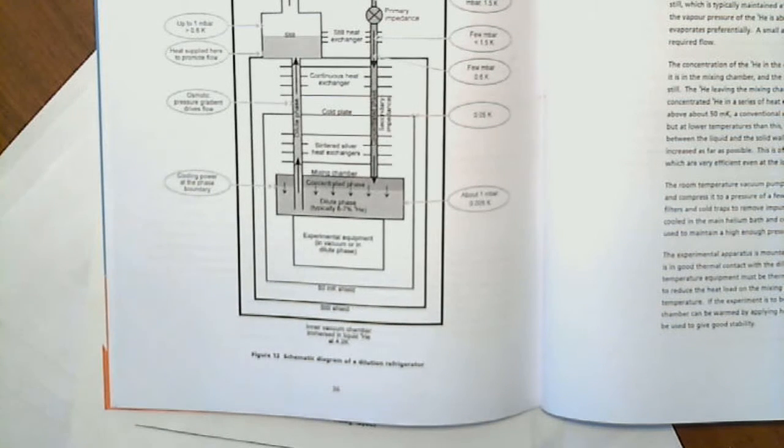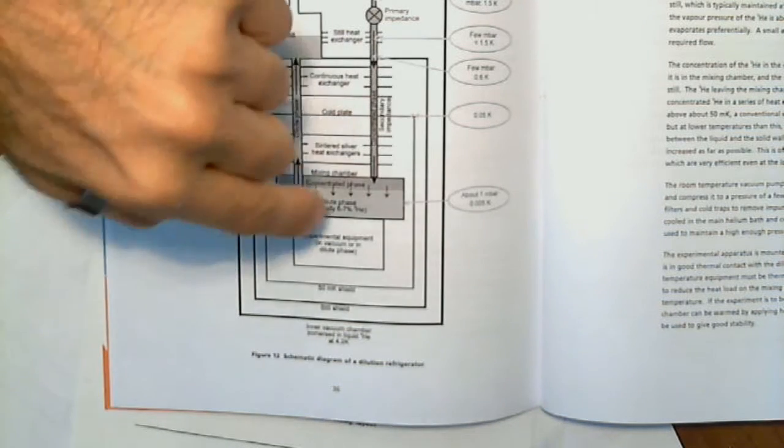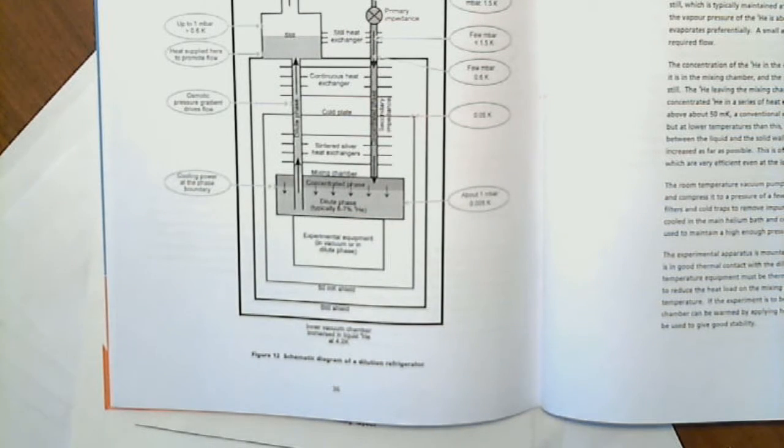We call it here about the dilute phase and concentrate phase. If you see the drawing, the concentrate phase is the phase pure from helium-3, and the dilute phase is the phase from helium-4 with dilute atoms from helium-3.